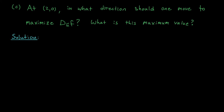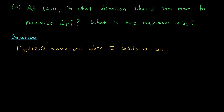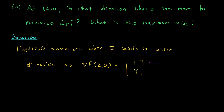Last part of the problem. At the point (2, 0), in which direction should we move to maximize our directional derivative? Also, what is this maximum value? The directional derivative is maximized when we move in the direction of the gradient. So duf at (2, 0) is largest when u points in the same direction as the gradient vector del f at (2, 0), which we found in part a to be (1, -4). So we want our vector u pointing in the direction of (1, -4).